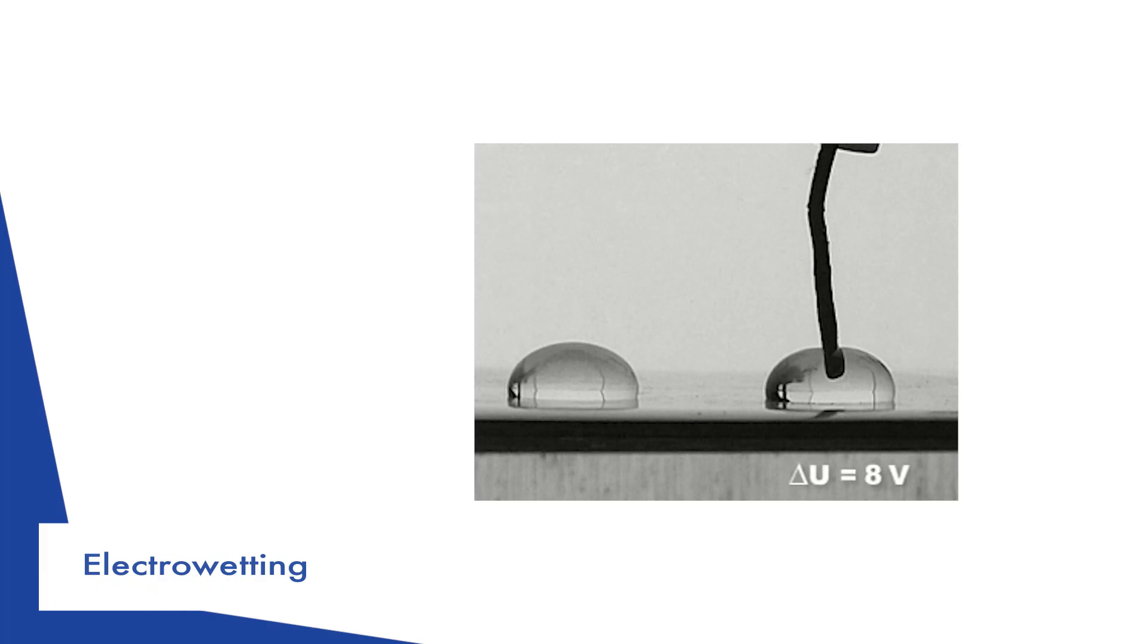It is sometimes useful to modify the contact angle prescribed by Young's relation. Applying an electrical field between the drop and its insulating substrate is a way to induce such a modification. The drop acts as a capacitor that tends to minimize its electrical energy by spreading. Hence, contact angles in electrowetting are sensitive to the applied voltage. This process is reversible, and it is exploited to build liquid lenses with an adjustable focal length.